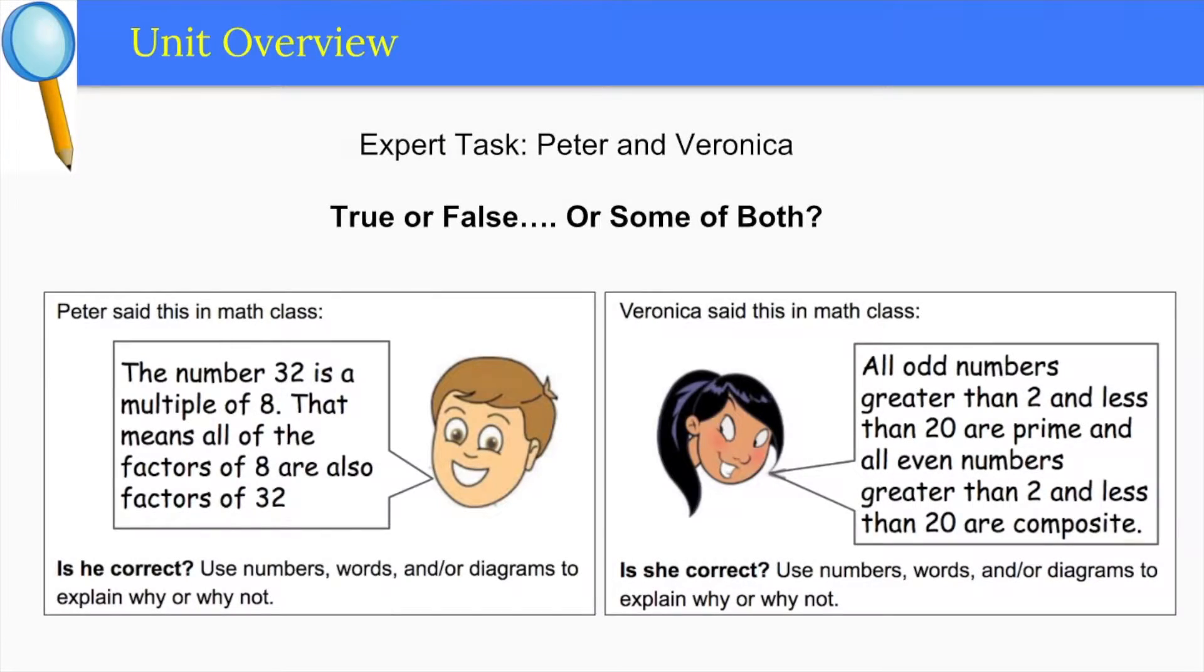One example of how students will be thinking about factors can be seen in this unit's expert task, Peter and Veronica. In this task, students are asked to evaluate some statements made about numbers as being factors, multiples, prime, and or composite. This lesson can be done with the paper version, but it is also available as a Google presentation in the online unit folder.